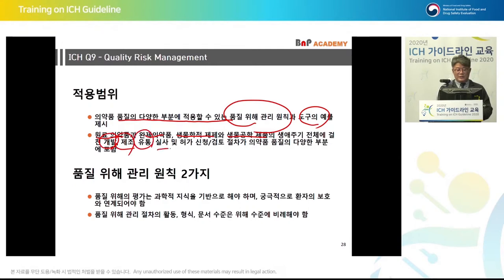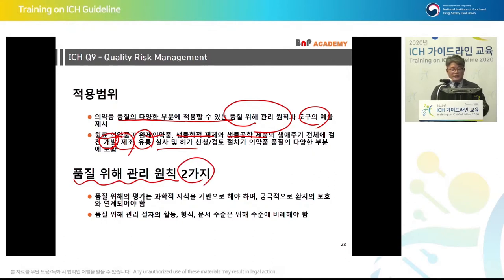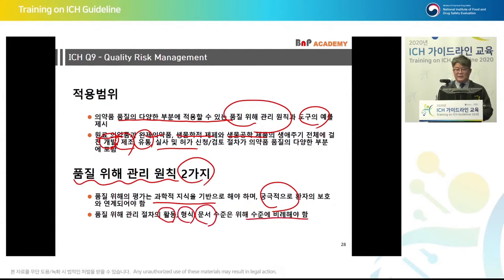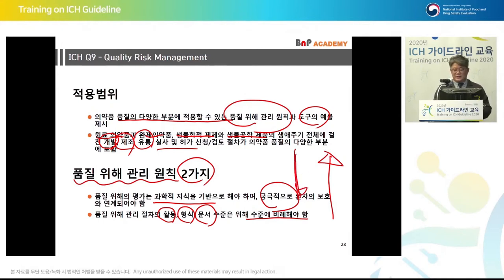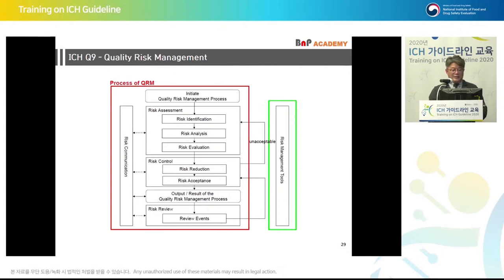The scope covers submission review processes throughout the lifecycle of drug substance, drug product, biological and biotechnological products. There are two principles of quality risk management. First, the evaluation of risk to quality should be based on scientific knowledge and ultimately linked to the protection of the patient. Second, the level of effort, formality, and documentation of the quality risk management process should be commensurate with the level of risk. This slide explains the Q9 structure very well.